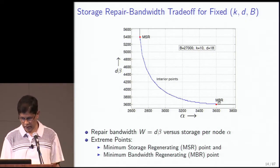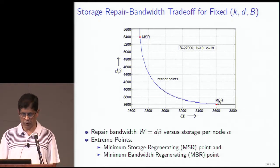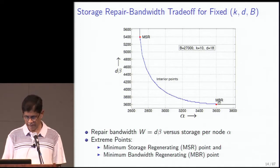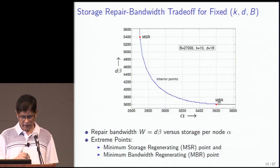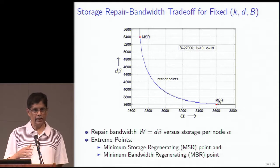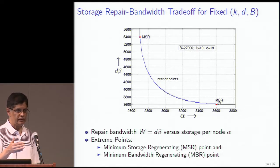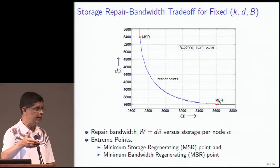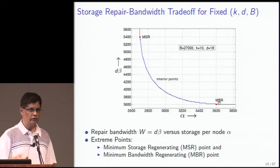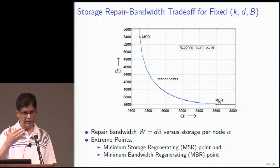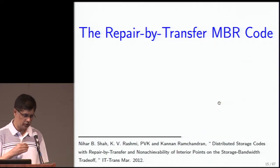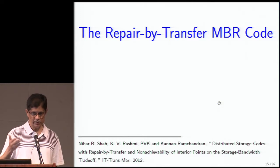There are two extremal points. The minimum storage regenerating (MSR) point puts a premium on storage — you store the least possible. The minimum bandwidth regenerating (MBR) point puts a premium on download — you download the least possible. Initial attention was on designing codes for these two extreme points; the other points are called interior points. I'll talk about a couple of constructions for codes at these extreme points, focusing on constructions from our group.